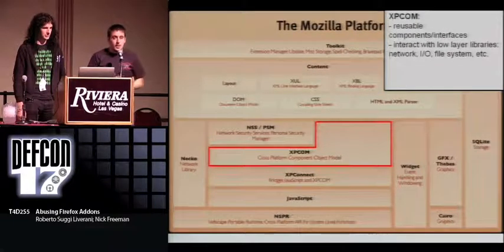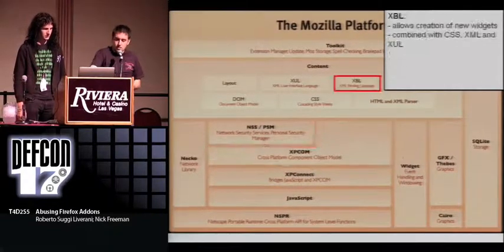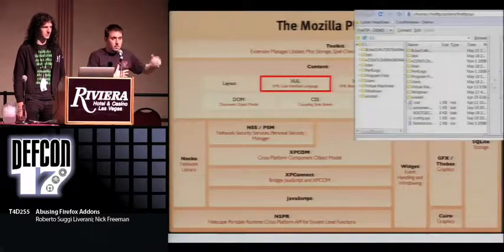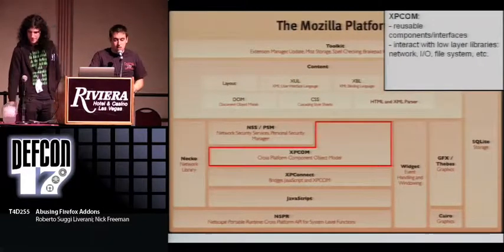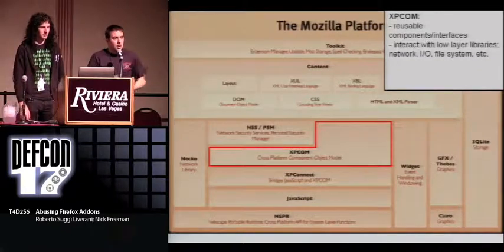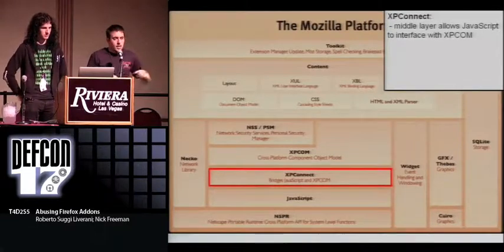XPCOM components are the core functionality of your browser Firefox. There are thousands of components and interfaces shipped with Firefox, and these can be used by extensions. FireFTP uses an XPCOM component interface to show the listing of your C folder. It allows you to interact with your operating system, talk with your network libraries, or access the file system. You need a middle layer to interact with XPCOM components called XPConnect. JavaScript can actually talk to XPCOM components through this layer, and we'll see some examples later in our demo.